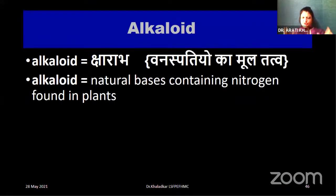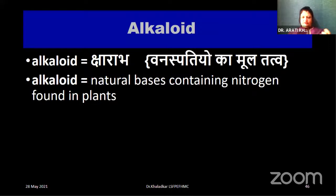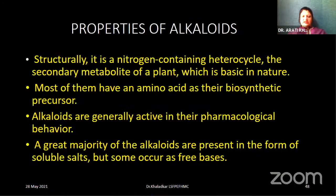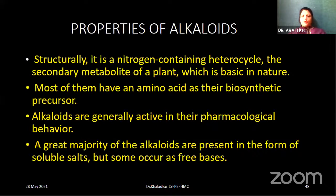Now we come to alkaloids. What are alkaloids? They are the most important natural bases containing nitrogen, found in plants — nitrogen-containing heterocyclic metabolites. They are generally very active in their pharmacological behavior. Examples include: tobacco (nicotine), Coffea cruda, Colchicine, Conium maculatum, hyoscine, Ipecac, Nux vomica, and strychnine. Next, resinoids — extracts of resinous plant exudates consisting of precipitates in powder form, derived from dry materials, embodying the most important active principles of the plant.